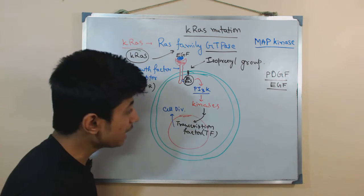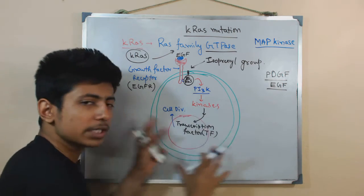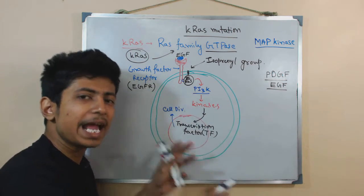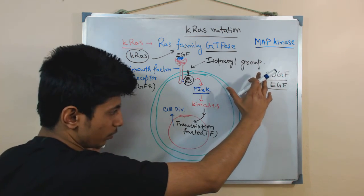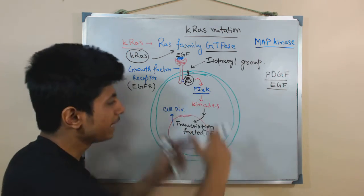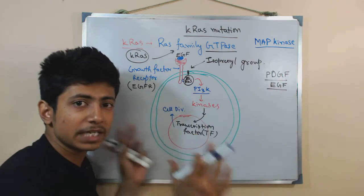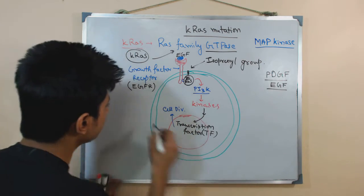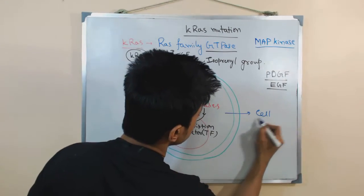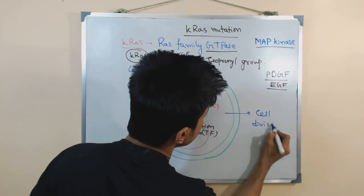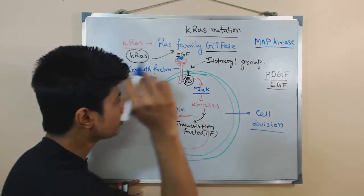Those mRNAs are translated into proteins, and the cell produces a lot of cell division proteins like cyclins — Cyclin G, Cyclin F, Cyclin A, Cyclin D, Cyclin C. Lots of cyclin molecules start to generate because cyclin molecules are the key molecules for cell division. Once the concentration of these molecules increases inside the cell, they crosstalk and start all the processes for the cell to divide again and again — ultimately causing cell division and growth.